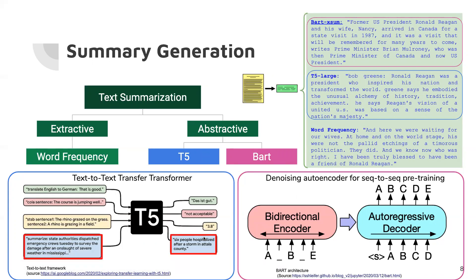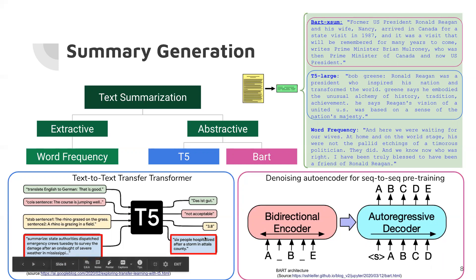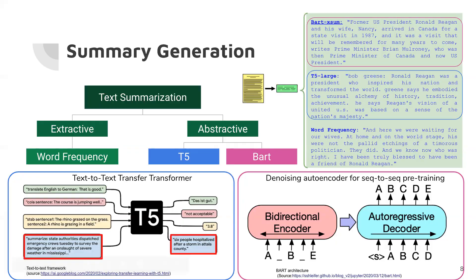BART essentially generalizes BERT and GPT training schemes, combining a bidirectional encoder and left-to-right decoder. It is fine-tuned particularly for text summarization. Here on the top right are the sample summaries generated for the same speech. The average summary lengths are 50 words.